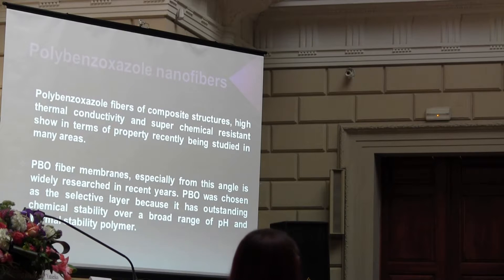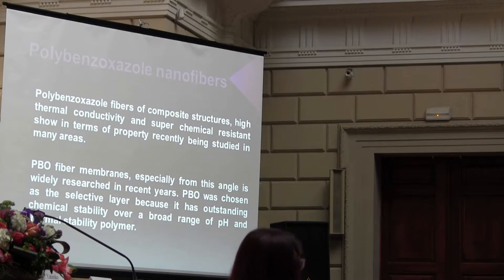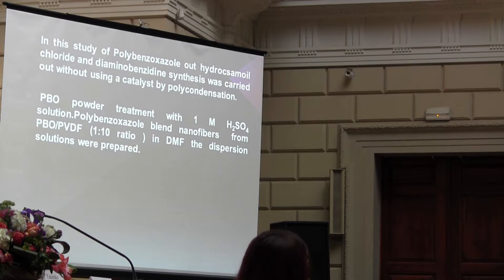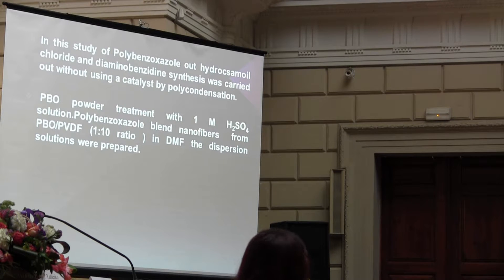Polymer solution nanofibers comprise a structure with high-performance nanofibers having anti-chemical resistance, which can be used in many areas. Polyimide fiber membranes have been applied in research this year. Polyimide is also selected because it has outstanding capacity over a wide range of pH and thermal stability. In this study, the anti-inflammatory synthesis of polyimide was derived without using a catalyst by a fair concentration, treated with one molar sulfuric acid solution. Polyimide nanofibers from PVDF and polyimide acid in DMF solvent were the special solution of the group.